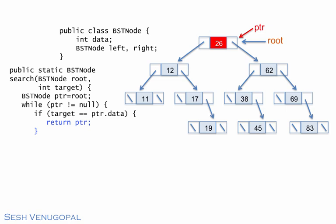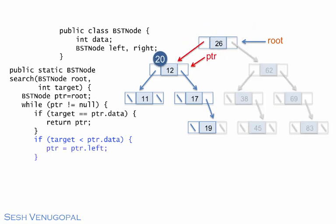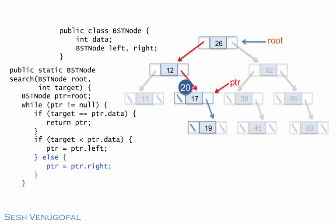Otherwise, we check if target is less than PTR.data. If true, we set PTR to PTR.left and make a left turn. Otherwise, we set PTR to PTR.right, which will make a right turn and continue with the next iteration of the loop.